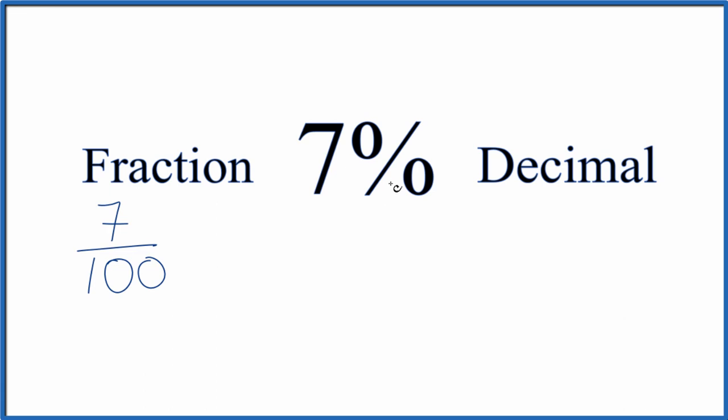And there's our fraction. 7% equals the fraction 7 over 100. And we really can't reduce this any further.